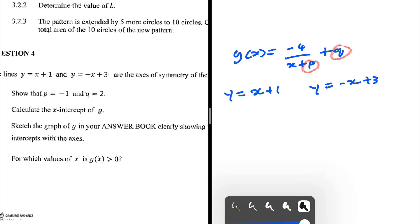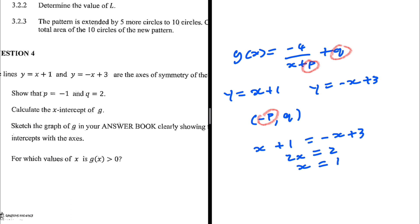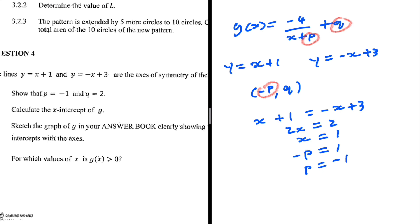There are some basics to recall: these axes of symmetry touch at a point where minus p is the x-coordinate and q is the y-coordinate. To find minus p, we equate the axes of symmetry: x plus 1 equals minus x plus 3, so 2x equals 2, giving x equals 1. Since x equals minus p at that point, we get minus p equals 1, so p equals minus 1.